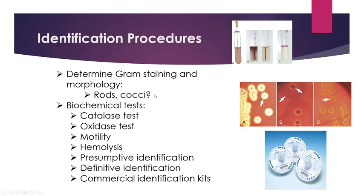Different ways of identifying bacteria include Gram staining and morphology — are they Gram-positive or Gram-negative, rods or cocci? Then we look at biochemical tests: the catalase test, the oxidase test, motility, and hemolysis. From these four tests we can make a presumptive identification. Definitive identification can be done through DNA testing or commercial identification kits. The motility test uses a metal rod dipped in a growing culture and inserted into a gel — if bacteria spread across the gel, they're motile; if they stay in place, they're non-motile.